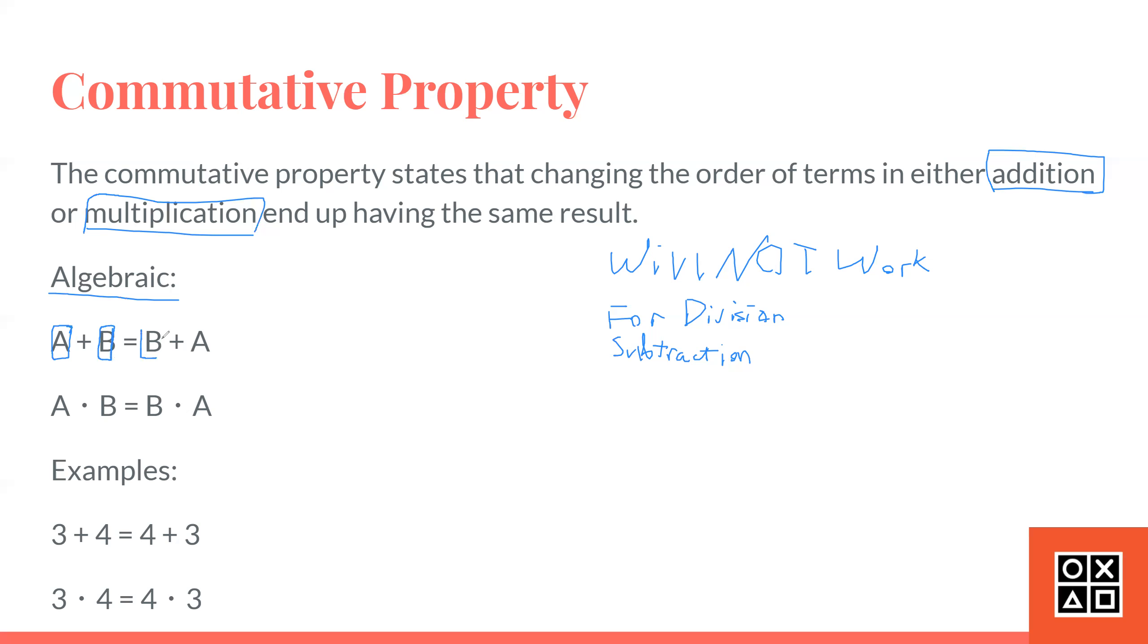This states that changing the order of this equation will not affect its outcome. For example, if A represented 1 and if B represented 2, then if it was 2 plus 1, these two have to be the same thing, because 1 plus 2 is 3, and 2 plus 1 is also 3.